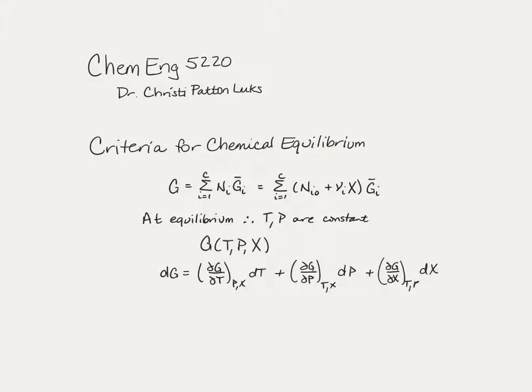I end up with this as my expression, and I know that at equilibrium, this will be zero. And I'm specifying constant temperature and pressure, so those two terms will be zero. So, therefore, I just end up with the fact that I'm going to require DG dx extent of reaction at constant temperature and pressure to be zero.